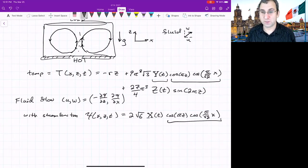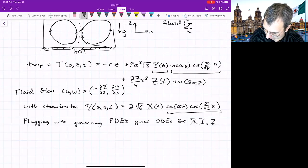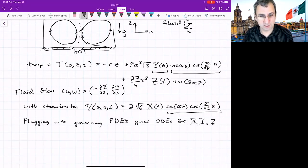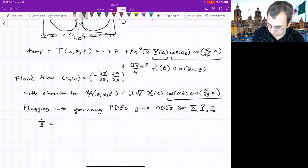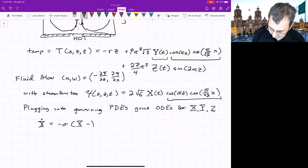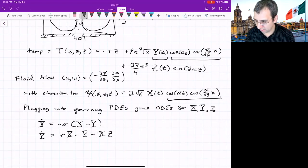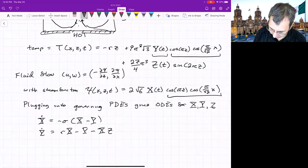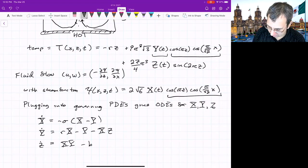Plugging into governing PDEs gives ODEs for X, Y, and Z. And if you want to know the details, you can find them. I'm just trying to sketch for you where this came from at all. The ODEs would be, you know, how do these change in time? So X dot equals negative σX minus Y. That actually looks linear. Capital Y dot equals RX minus Y minus XZ. Oh, so there's a nonlinearity there. Z dot equals XY. Oh, another nonlinearity minus BZ.